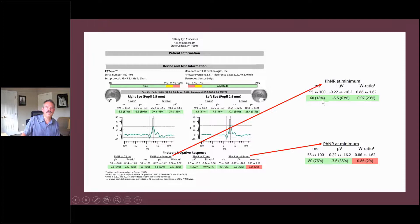What we're seeing here is the implicit time in the right eye is 18%, which is outstanding. The implicit time in the left eye is 76%, not nearly as good.